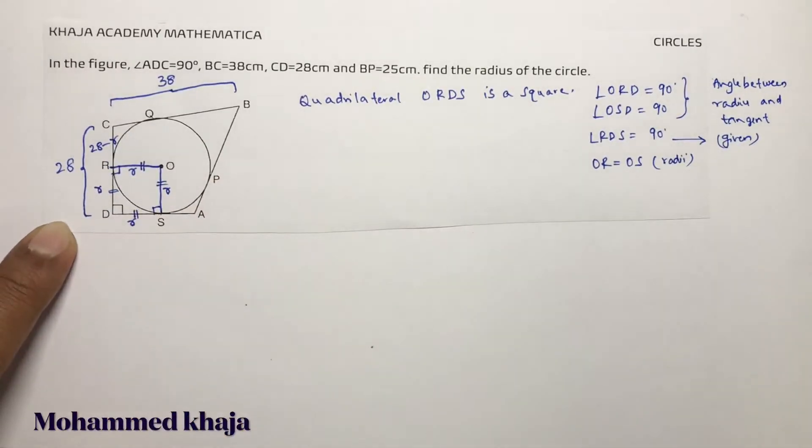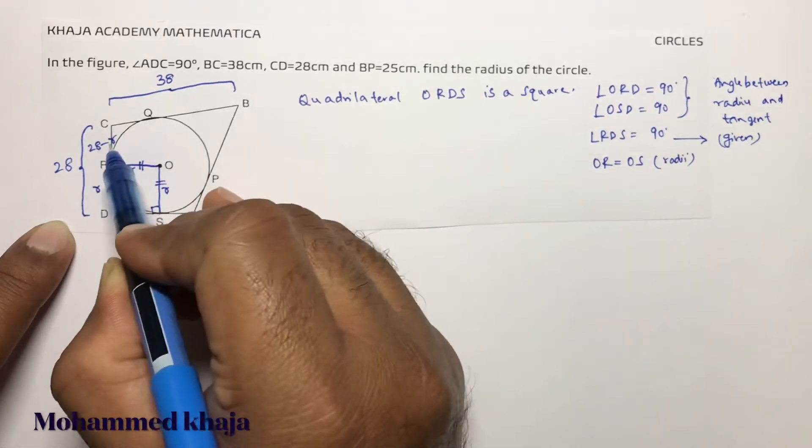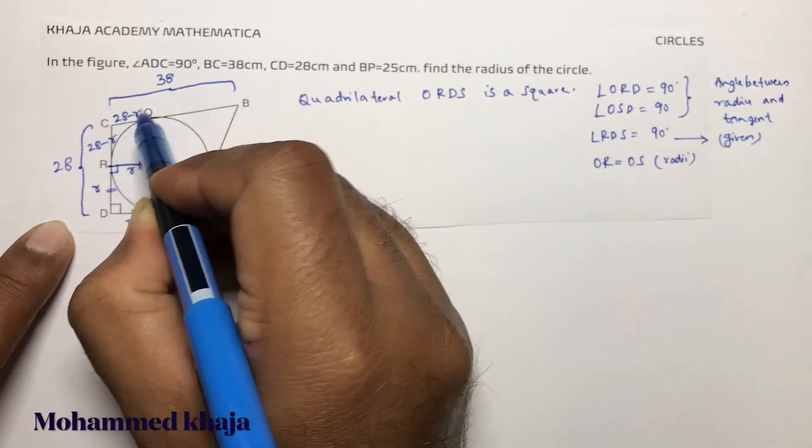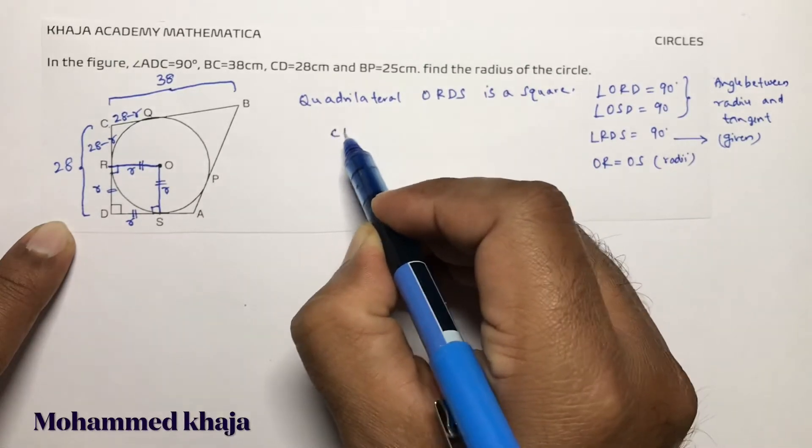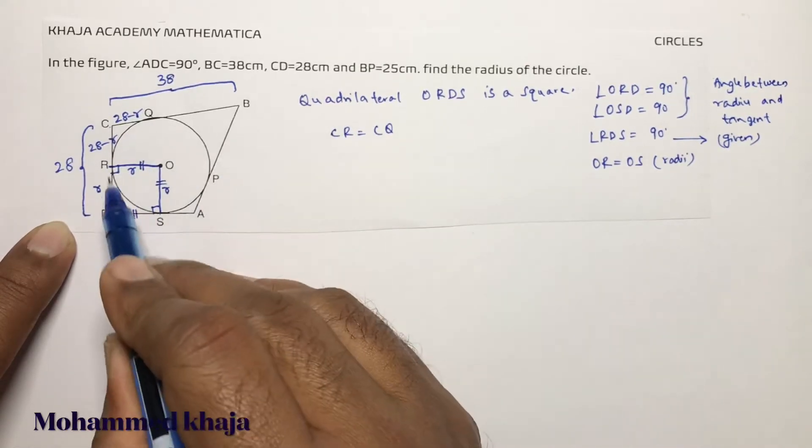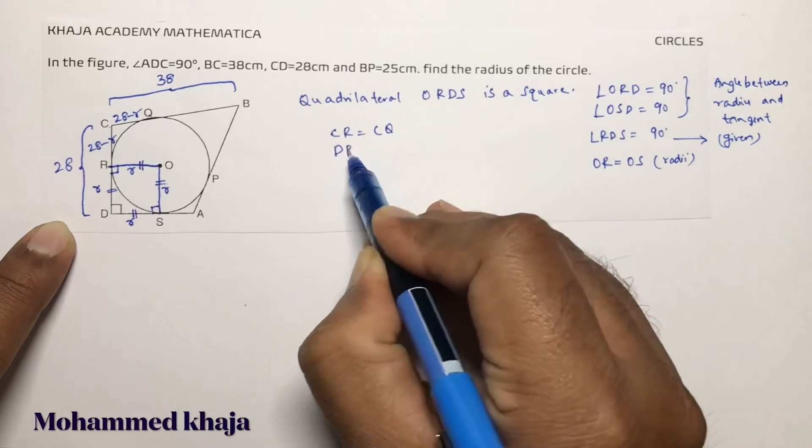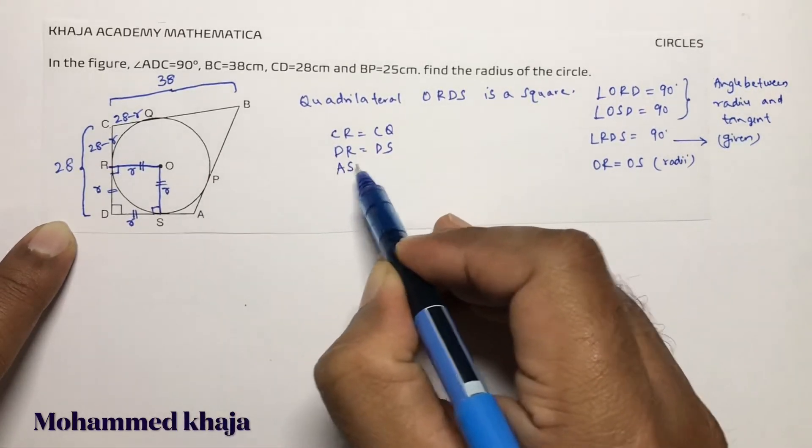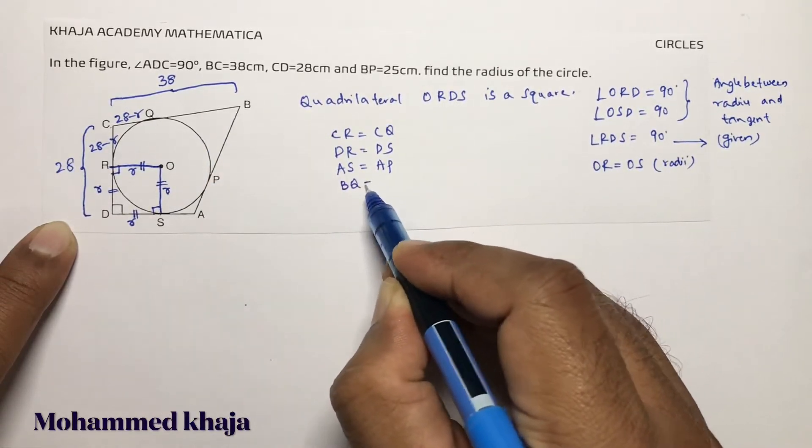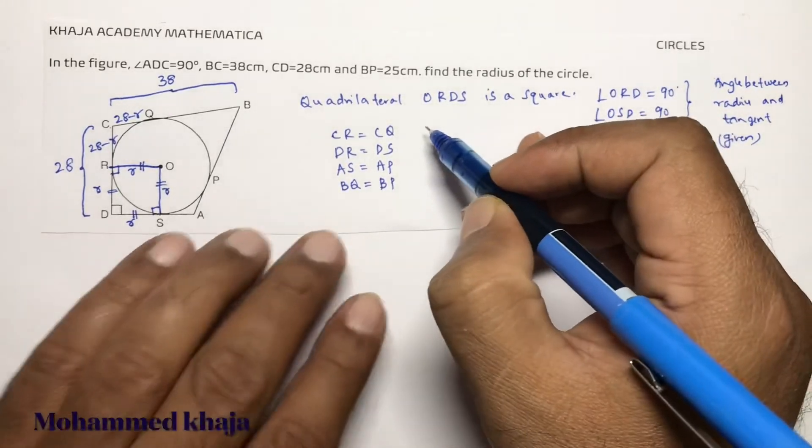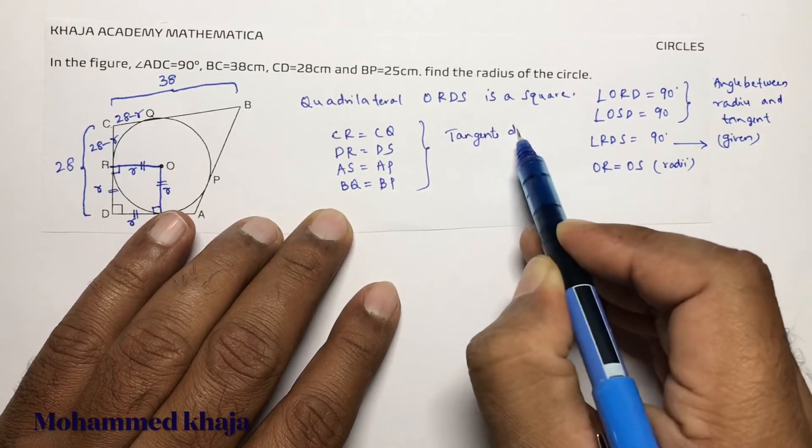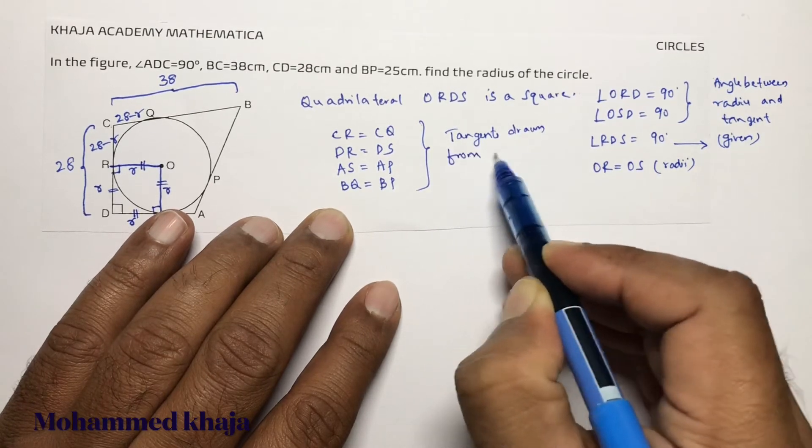When CD is 28cm, CR will be 28 minus R. If CR is 28 minus R, then CQ will be 28 minus R. Once I'll write all this: CR equals CQ, DR equals DS, and AS equals AP, BQ equals BP. This all are possible because tangents drawn from an external point are equal.